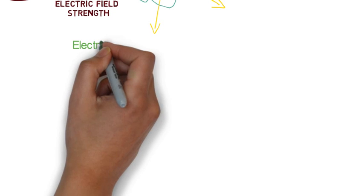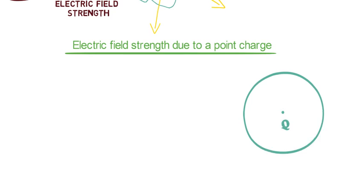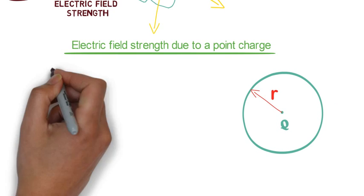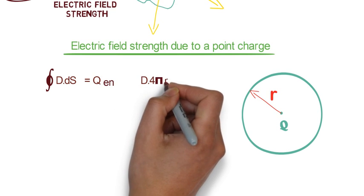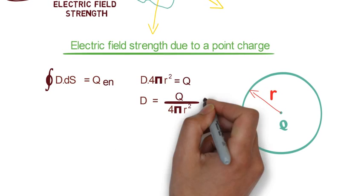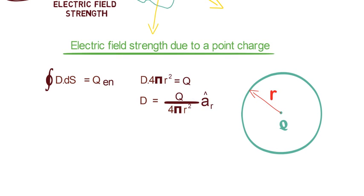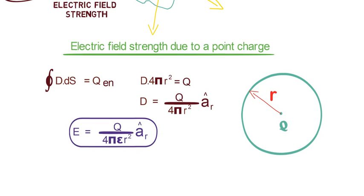Let's calculate the electric field strength due to a point charge at a distance R. First, we will draw a Gaussian surface. For making calculations easy, let's take a spherical surface whose center coincides with the charge. So according to Gauss's law, the closed surface integral of D is equal to Q enclosed, where D represents the electric flux density. When we simplify this, we get D into 4πR² equal to Q, or D equal to Q divided by 4πR², and the direction would be radially outward. If we want to calculate electric field intensity, we can divide the density by the permittivity of the medium, since ε times E (intensity) is equal to D (density).